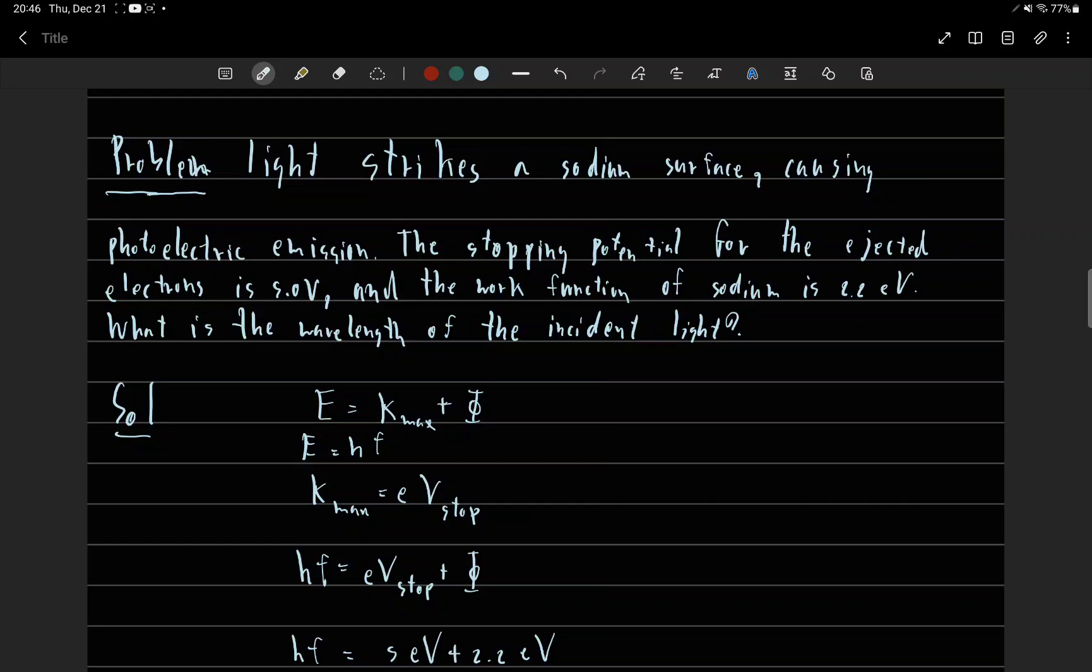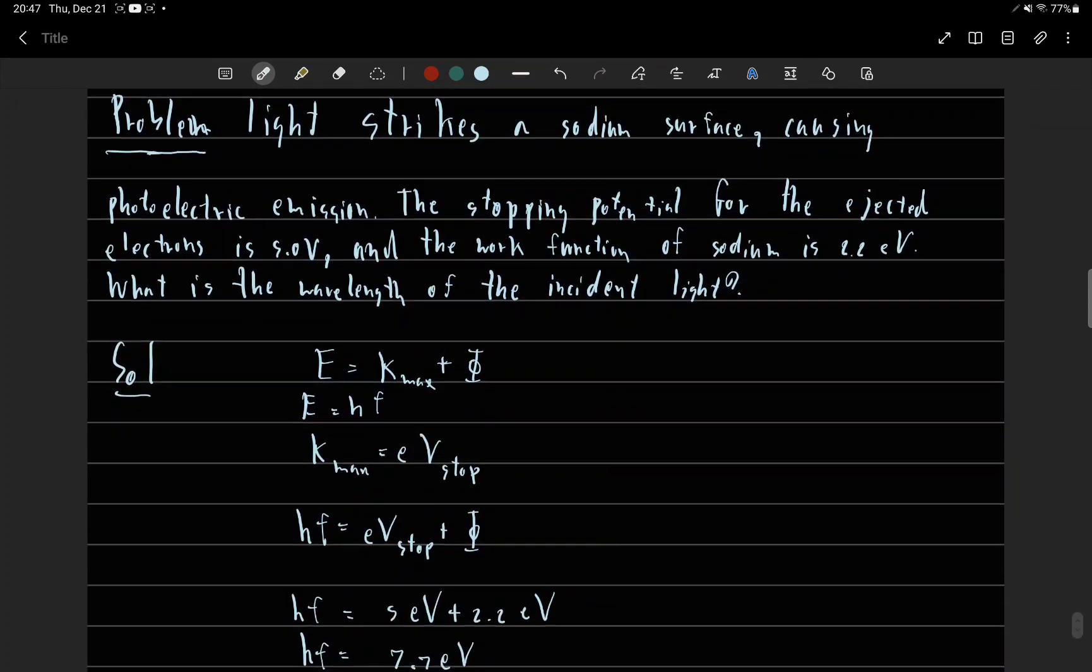E equals Kmax plus work function. E equals HF. Kmax equals e times V stop. So HF equals e V stop plus work function.